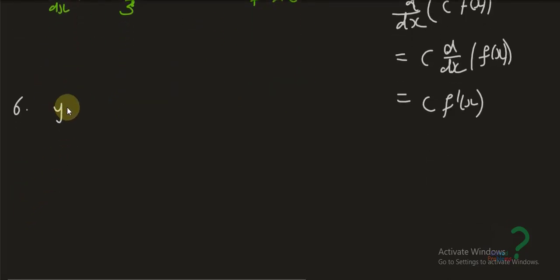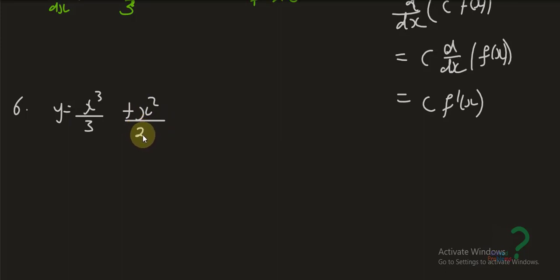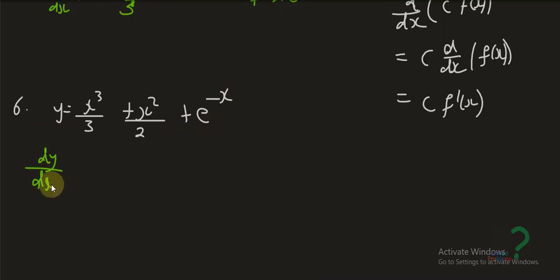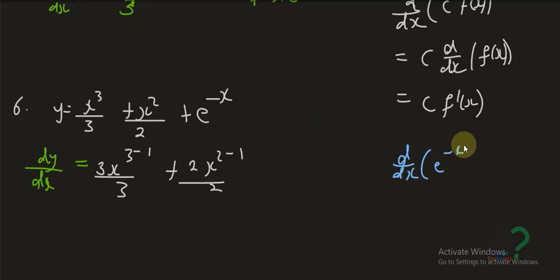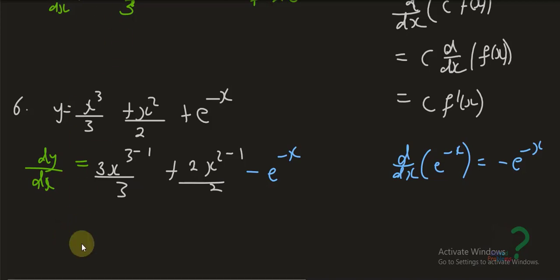Example six: y equals x cubed over 3 plus x squared over 2 plus e to the negative x. So dy over dx is going to be 3x squared over 3 plus 2x over 2 minus e to the negative x. Note that deriving e to the negative x uses the chain rule and gives negative e to the negative x. This simplifies to x squared plus x minus e to the negative x.